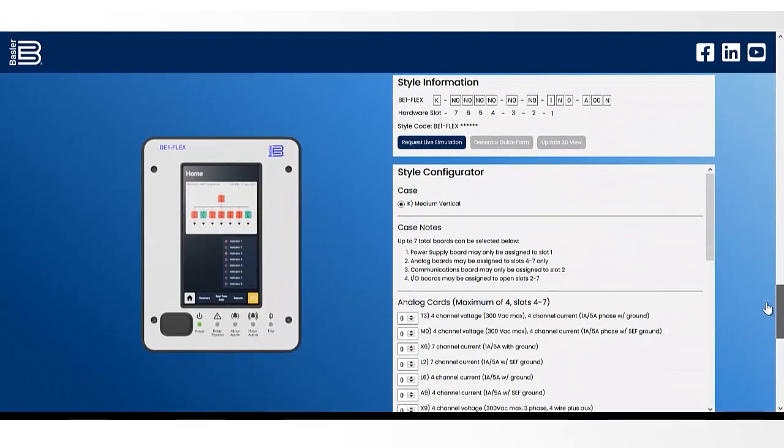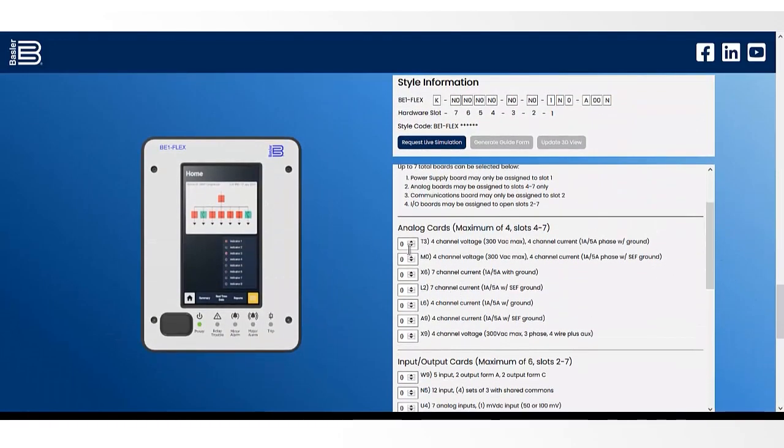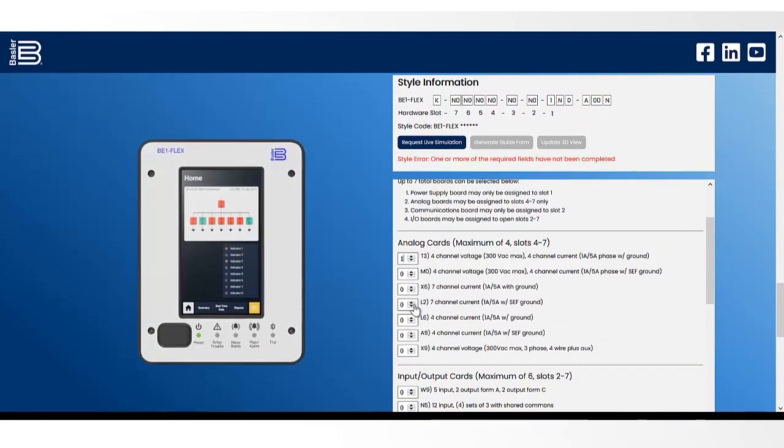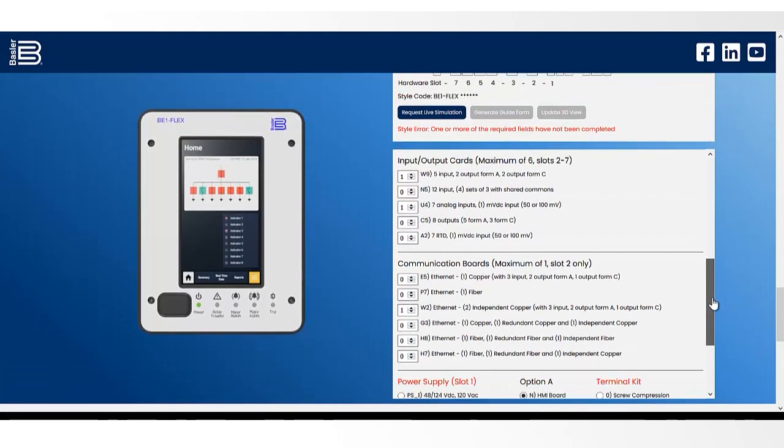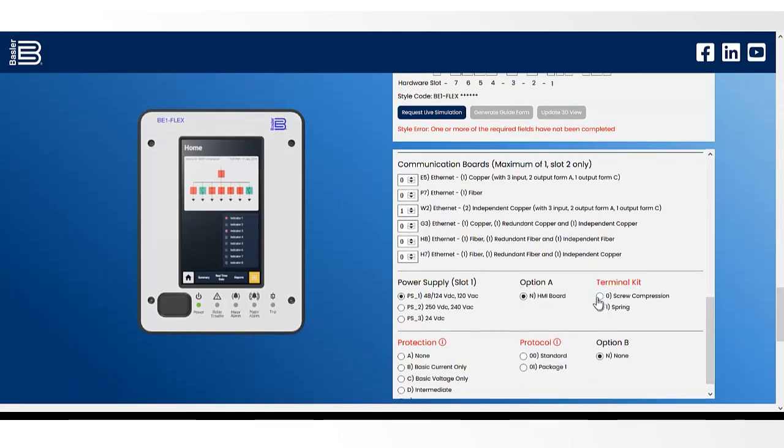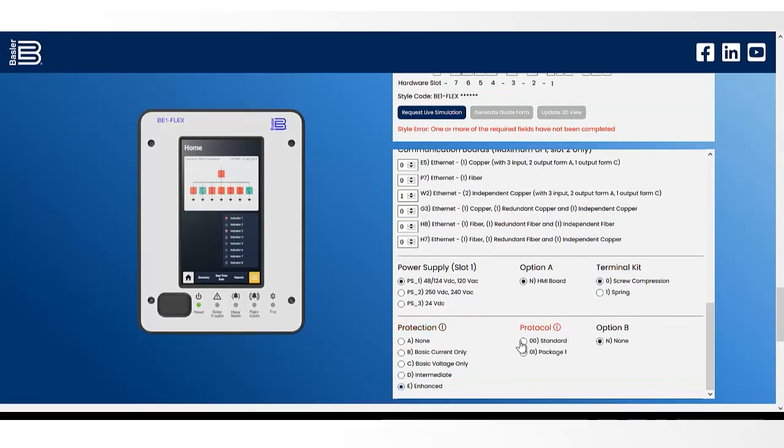Our product configurator allows you to choose the options you need and create a part number in real time. There are helpful explanations available for many of the options to make it easier to choose. Once you've chosen all of your options, your part number will be created and you can update the 3D model to view your configuration as built and interact with the model by dragging to rotate it.